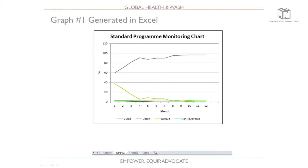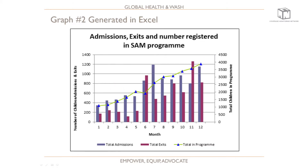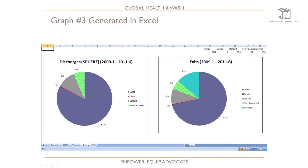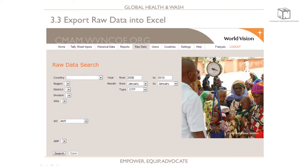At the bottom, you can see various sheets in the Excel file. The second sheet shows an SPMC graph displaying percentage trends over time for cure rates, death rates, default rates, and non-recovered rates. There's also a graph showing total admissions, total exits, and total number of children in the SAM program, and a pie chart for discharges and exits so you can compare these rates to Sphere standards. You can also export the raw data into Excel for further analysis.